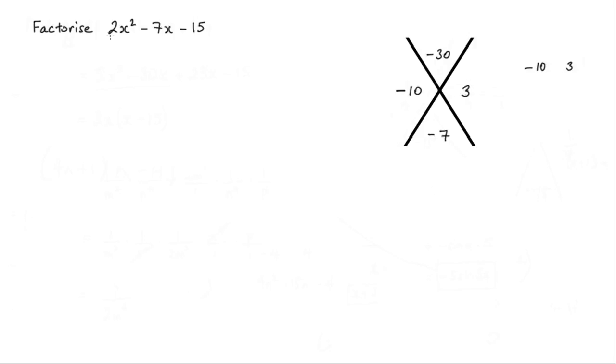Now the next step is to take this leading coefficient and divide each of these terms by that number. Let's see if these simplify. Well, -10 over 2 simplifies to -5 over 1, and 3 over 2 is already in its simplest form.